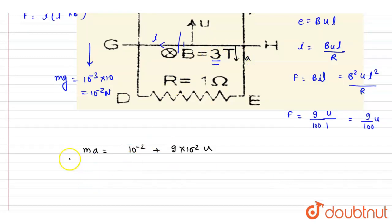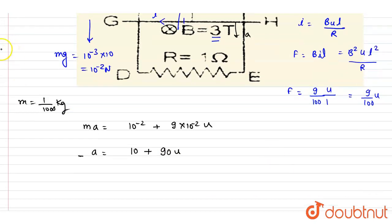So if you see, the mass we know is 10 to the power minus 3. So just multiply this expression by 10 to the power 3, so it will be 10 plus 90u, right? So the mass was in division as 1000. So we just multiplied this expression by 1000 and we got this. So acceleration is nothing but du/dt, right? So we will just write down this and integrate it.